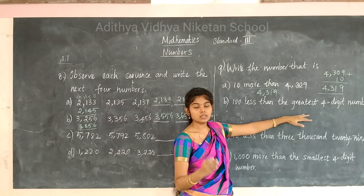Next: 10 less than 3029. Subtract 10 from 3029: 3029 minus 10. Then: 1000 more than the smallest 4-digit number. The smallest 4-digit number is 1000. 'More than' means add: 1000 plus 1000 equals 2000.